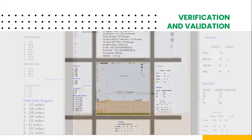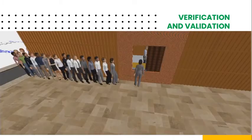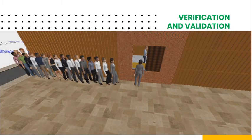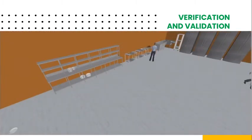Here is a small video of our simulation model. The customers make the order at this outside window. The ticket will be printed at the back and the meal will start to be prepared by one of the workers.